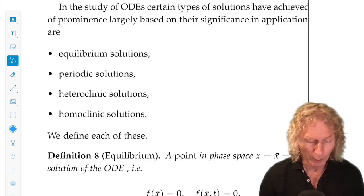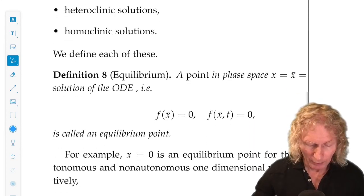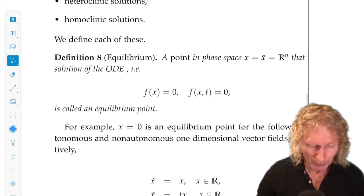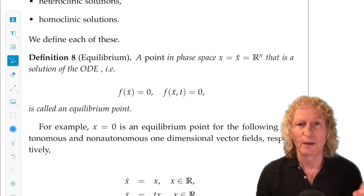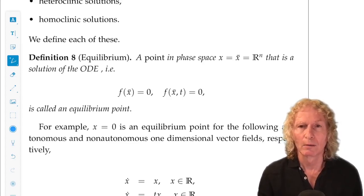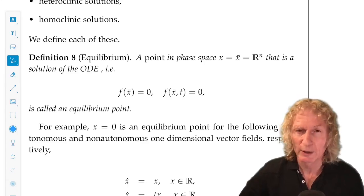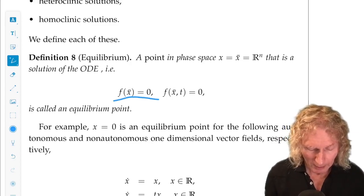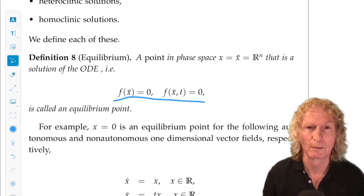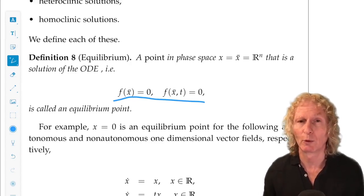Then we have periodic solutions and heteroclinic and homoclinic solutions. So a definition of each, equilibrium solutions. A point in the phase space x equal x-bar, that means it's a constant, that has a property that the vector field vanishes on that point, is called an equilibrium point. And that makes sense. It means it does not change in time. It's a fixed point.